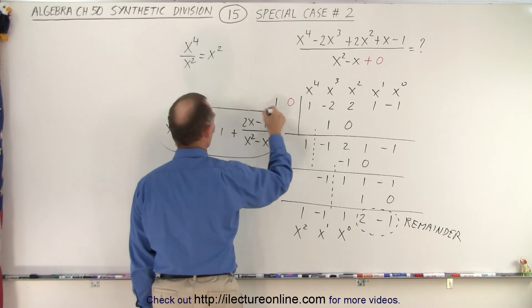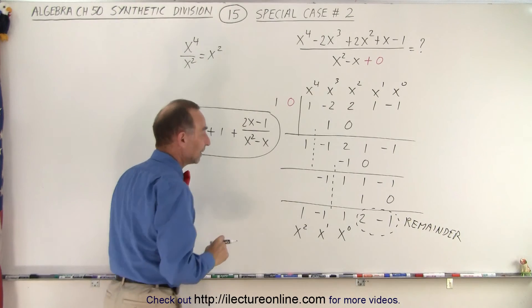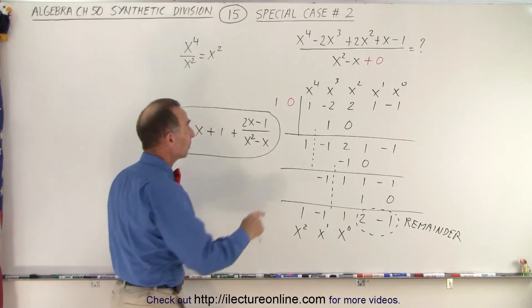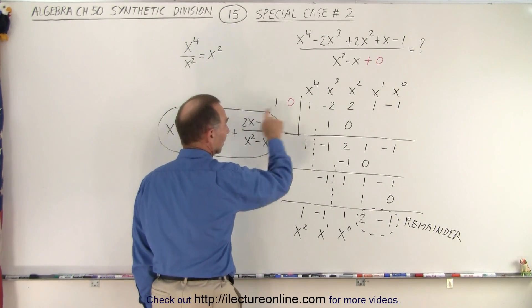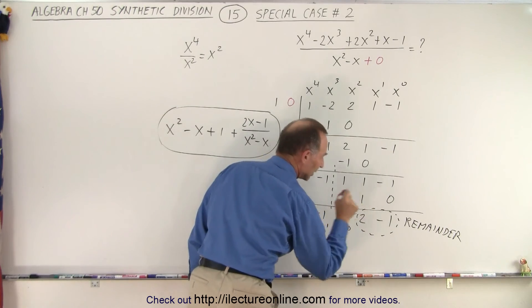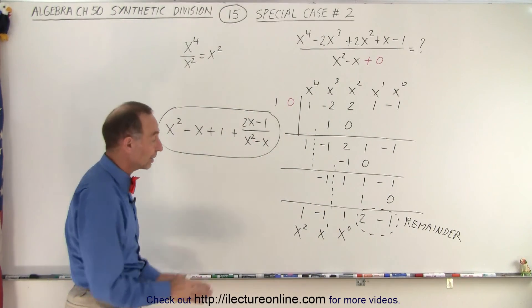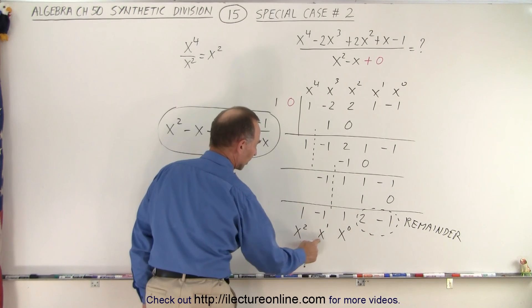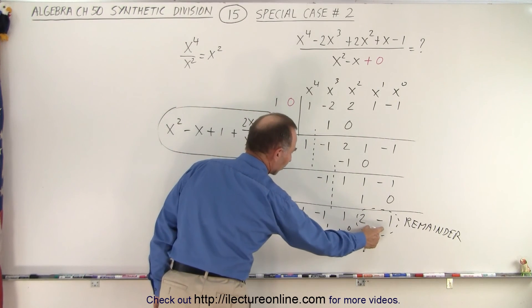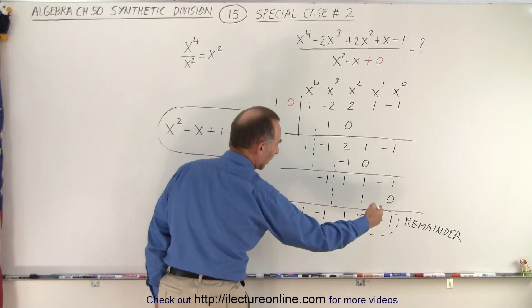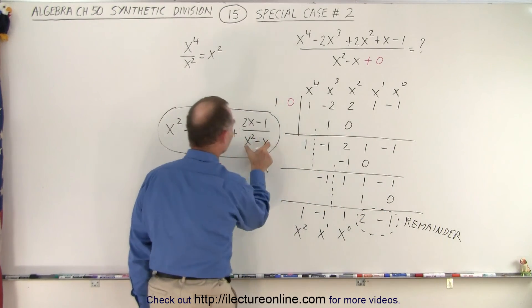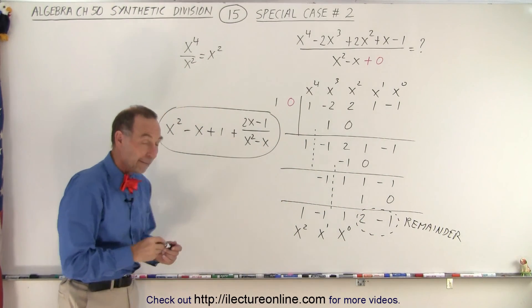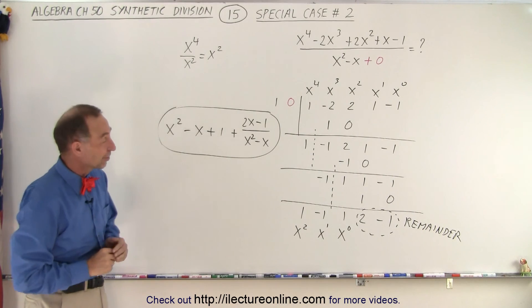And so this here is the total solution of our division. In this case, notice we had a missing term that we have to account for and we have a remainder that we need to account for. And so that is how we then come up with the final answer. This represents the coefficients of x squared, x and x to the 0. These are the coefficients of x and the constant over the denominator x squared minus x. And that is how it's done.